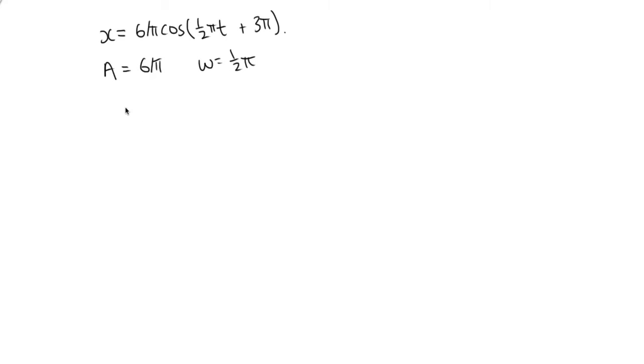So to get the total mechanical energy, the total mechanical energy is equal to 1 half ka squared. So we've got the amplitude squared already. We're going to have to work out what k is.